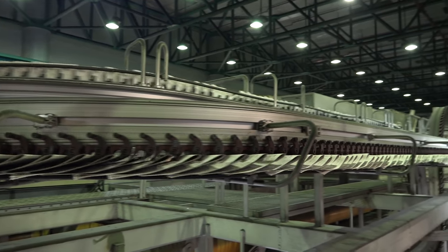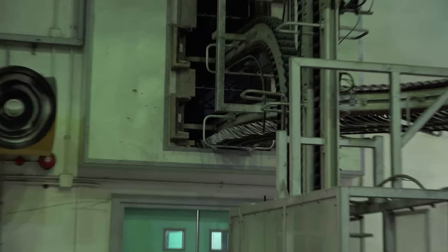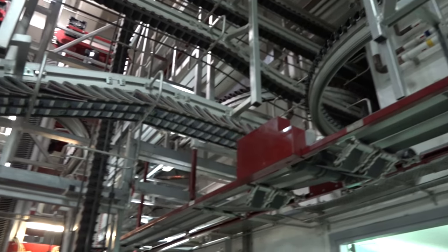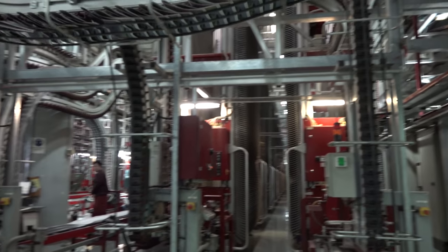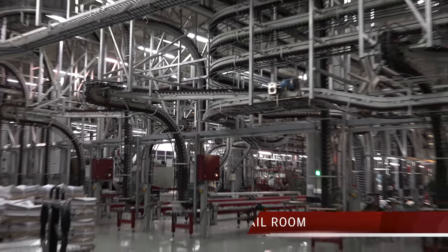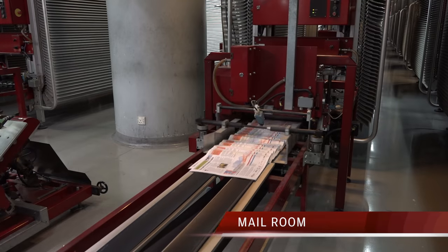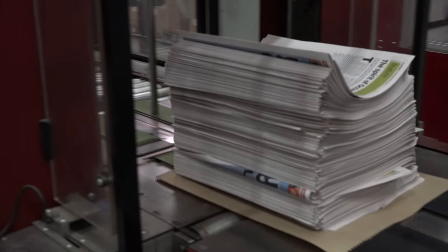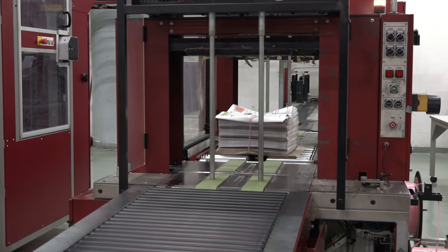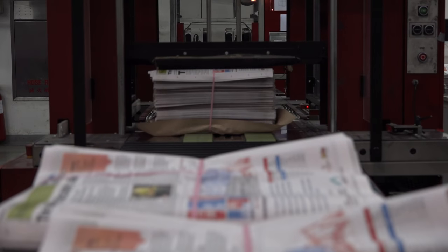The sections are clipped onto a conveyor belt and swiftly moved from the printing press into the mail room, where the pages are sorted, stacked, collated, and wrapped. Ready for delivery.